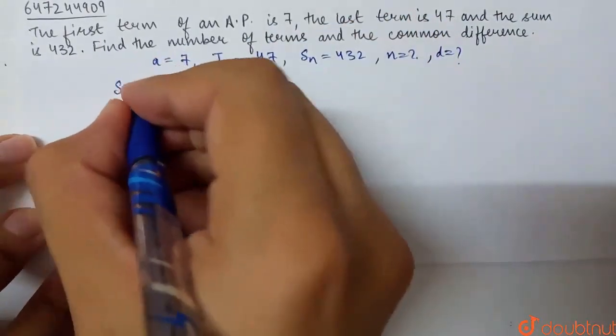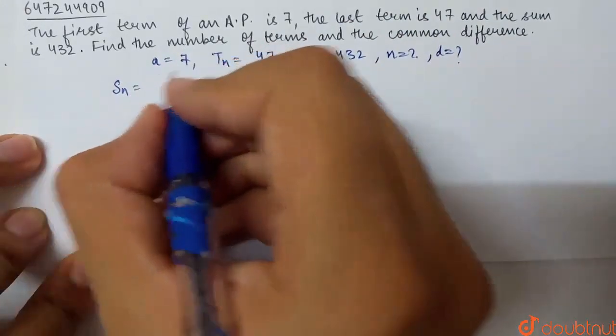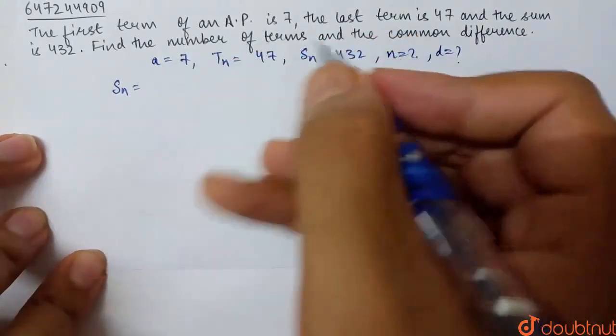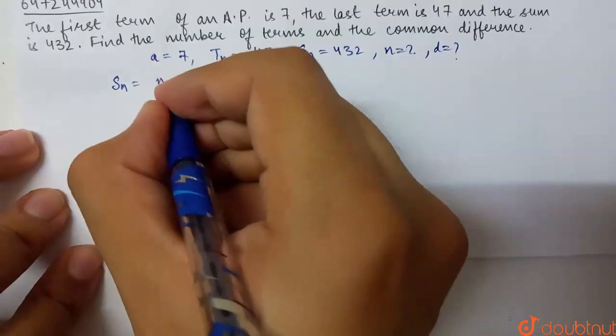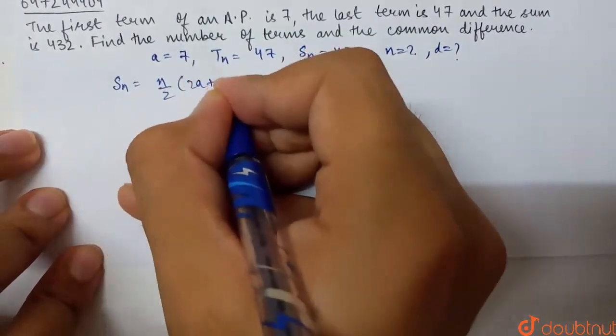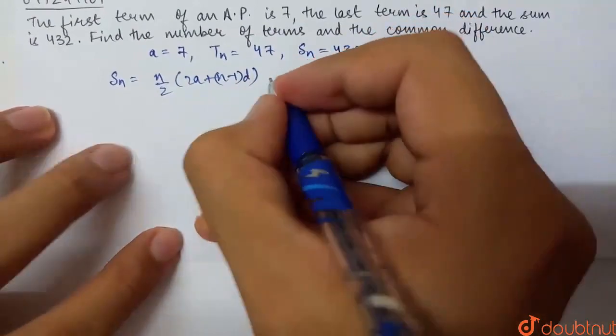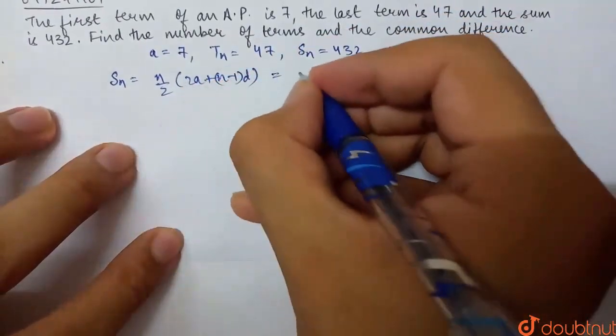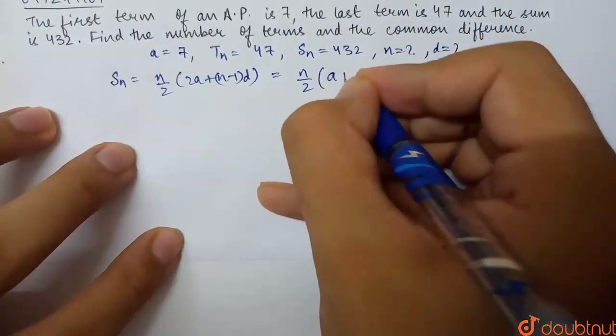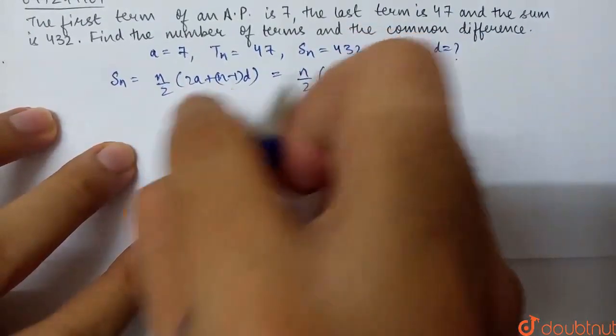We have SN, the sum of first N numbers of the AP. The formula is N by 2 into 2A plus N minus 1 into D. If we rearrange this, it's N by 2 into A plus A plus N minus 1 into D.